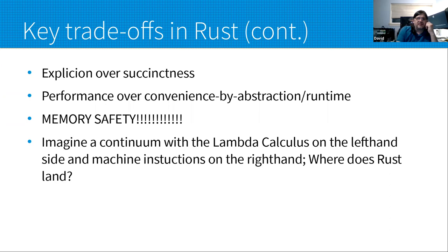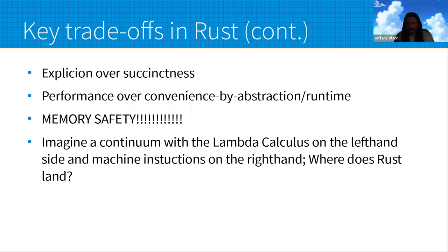Question about the borrow system: can you have multiple writers and one reader? The answer is the other way around — you can hold multiple immutable references, but only a single mutable reference at a time. If a mutable reference is held, new immutable references won't be allowed. Wrapping up on trade-offs: if you imagine a continuum with lambda calculus on the left and machine instructions on the right, Rust comes down somewhere in the center, though when it has to choose, it always goes toward C and C++ with respect to memory management.